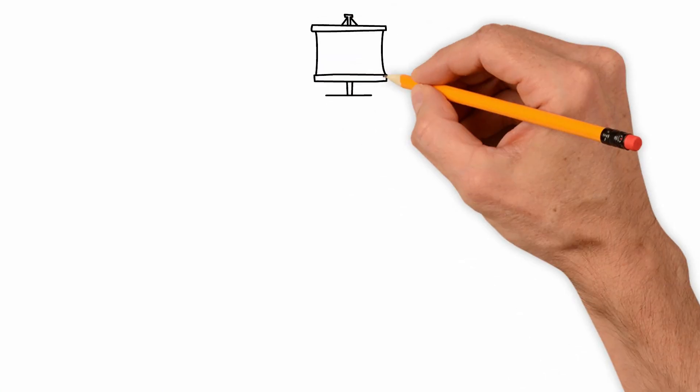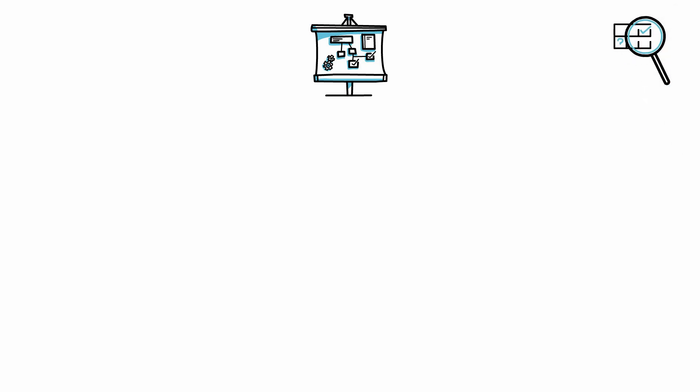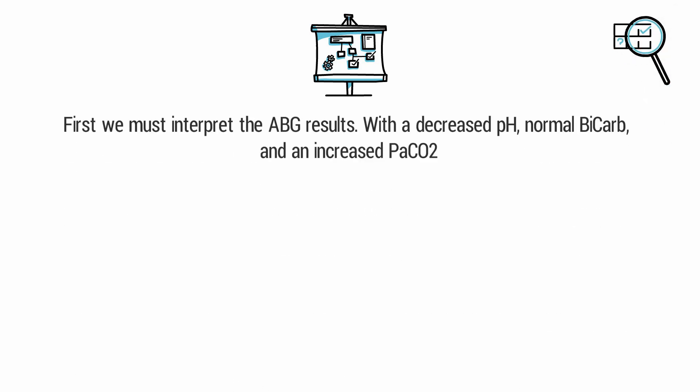Let's break it down and see if we can come up with the correct answer. First, we must interpret the ABG results. With a decreased pH, a normal bicarb, and an increased PaCO2, this tells us that the patient is in acute respiratory acidosis.